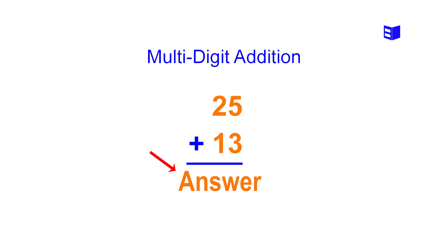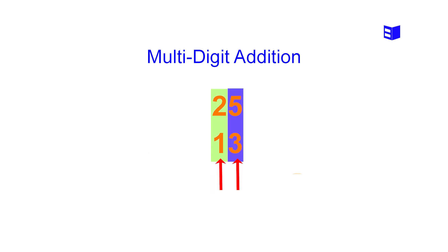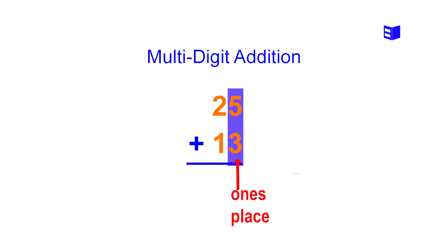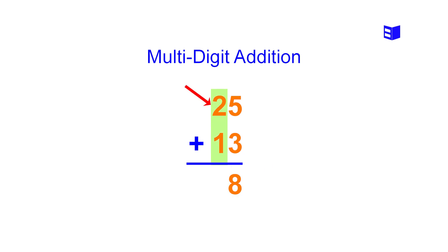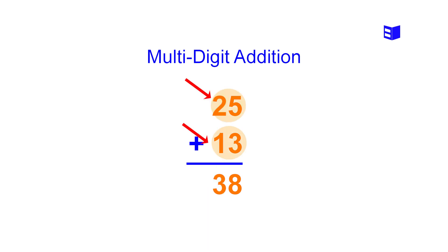Next we perform addition for each column — first the ones column, then the columns to the left. We take 5 plus 3 and the result is 8; we place the number 8 below the horizontal line in the ones column. Similarly, for the tens column we take 2 plus 1 and get the result 3; we place the number 3 below the horizontal line. We conclude that 25 plus 13 equals 38.